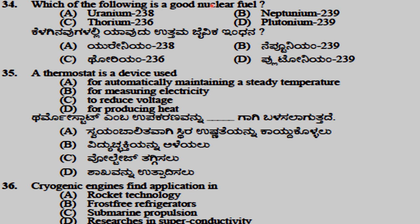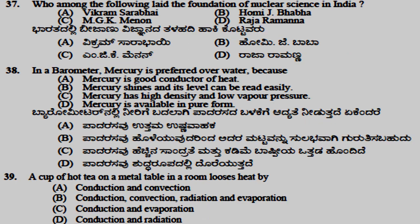Plutonium is a good nuclear fuel. A thermostat is a device used for automatically maintaining a steady temperature. Cryogenic engines find application in rocket technology. Homi J. Bhabha laid the foundation of nuclear science in India.